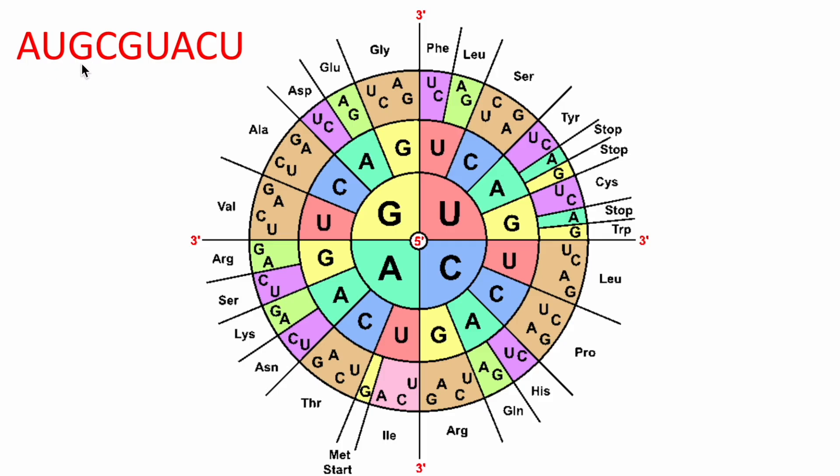So let's start here, AUG, and we're going to look here in the center of our circular chart, A, and then we're going to move to the next letter, which is U. So there's that U it's touching, and then G is down here. So we follow AUG, that gives us MET, which is an abbreviation for methionine, also known as our start codon.